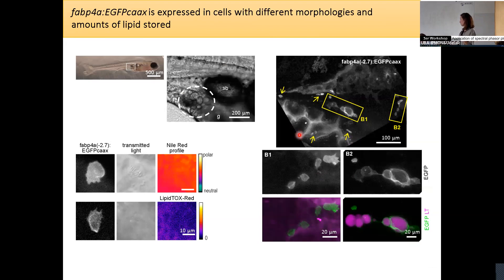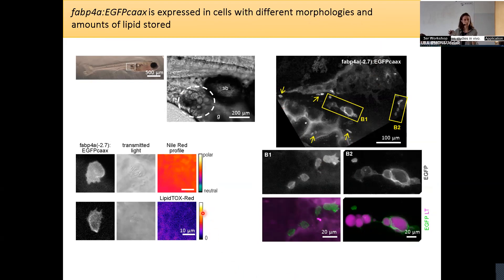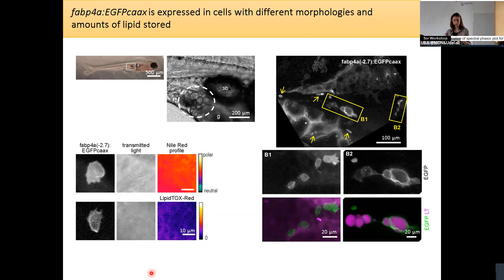We then looked more closely at the larvae and found that GFP also labels cells that had no lipophilic staining — we think these are adipocyte precursors. Interestingly, these cells have protrusions and we can see them moving around. We also observed cells with several small lipid droplets, suggesting an intermediate stage of differentiation.